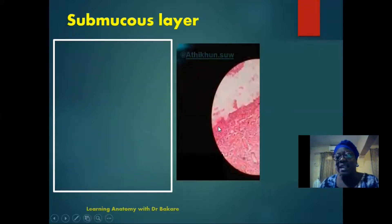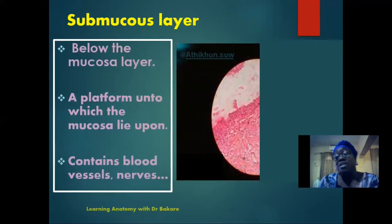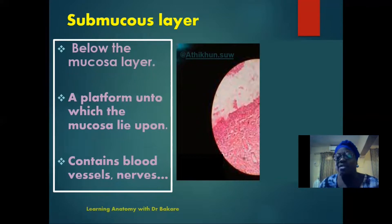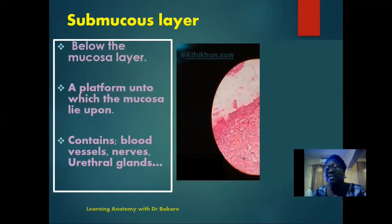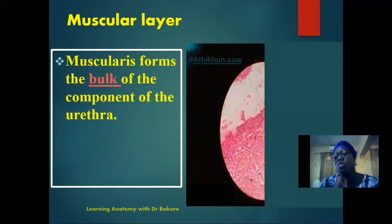The submucosal layer is the region seen below the mucosal lining, as the name implies — 'sub' meaning below. This layer provides structural support and helps hold the mucosal lining in place. Looking deeper into this region, we see blood vessels, nerves, and urethral glands. These urethral glands secrete mucus directed towards the lumen of the urethra. More externally, we have the muscularis layer, which takes the bulk of the urethra and is made of smooth muscle.